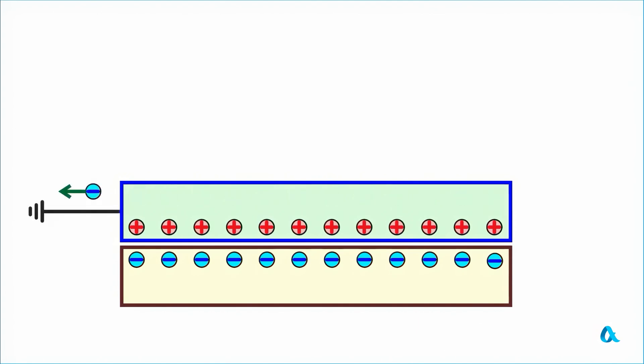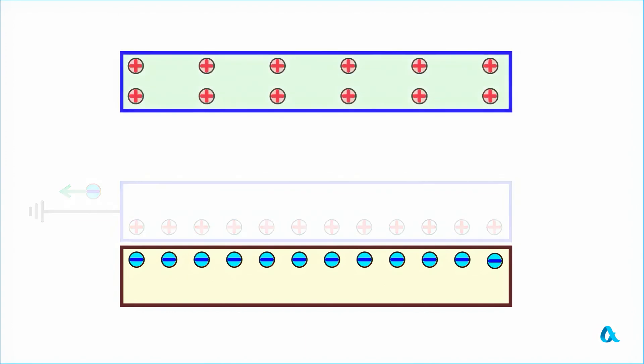We ground the metallic plate by touching it with a finger, and electrons leave it to the ground.